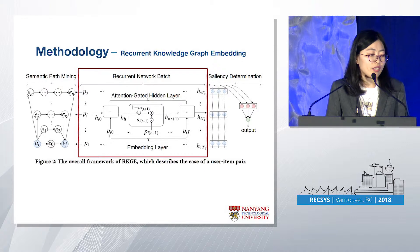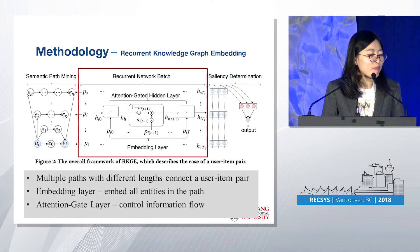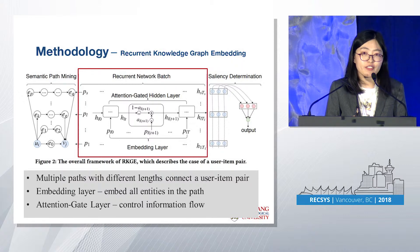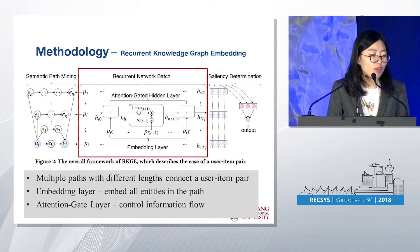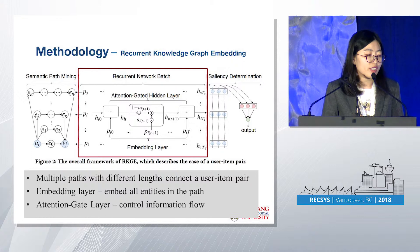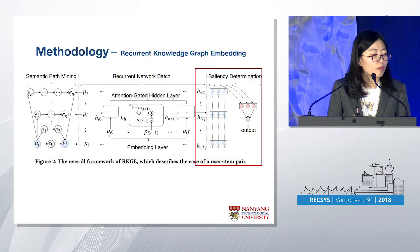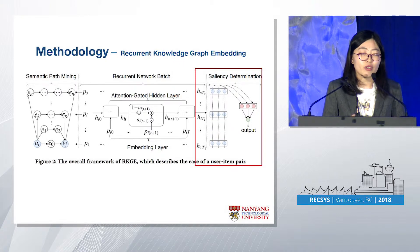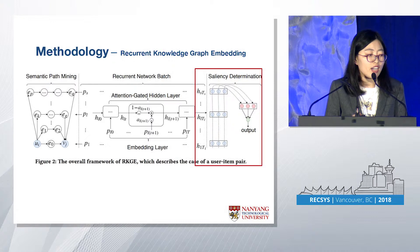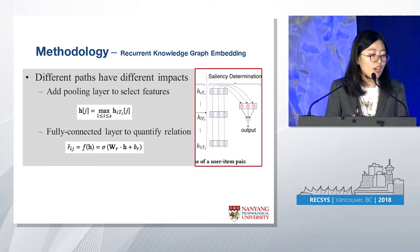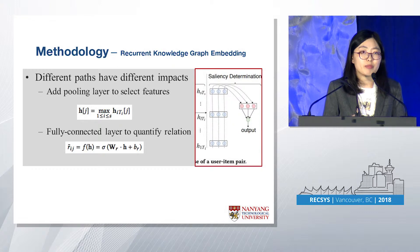The second module is the recurrent network batch. From the semantic path mining module, we get multiple paths with different lengths. In this module, we encode different paths into a batch of recurrent networks. For the embedding layers, we encode each entity in the path. Through the attention-gated layers, we control the information flow to learn the path's influence on the user's preference toward items. Finally, for the saliency determination, because we have many connected paths, we learn the hidden state of each path's influence. Since different paths may have different impacts, we add a pooling layer to select the most important features. Finally, we use a fully connected layer to quantify the relationships between items and users.